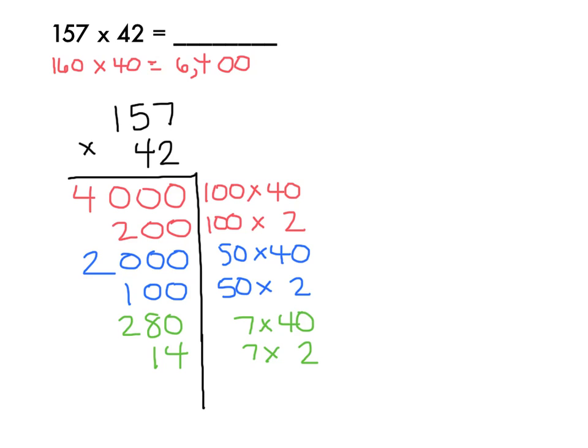Now I'm going to take all of my products and I'm going to add them together. I'm going to get 4, 9, 2 plus 1 plus 2 is 5, and 4 plus 2 is 6. And that makes my final answer 6,594. This makes sense because it's very close to my estimate.